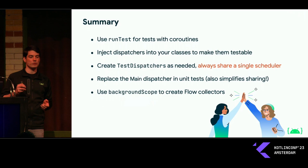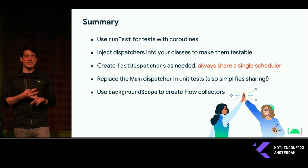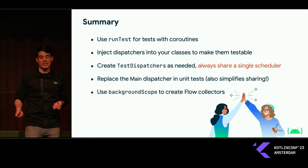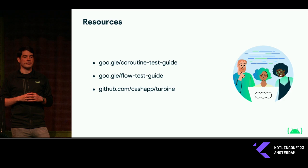Let's summarize what we learned today. Use runTest to test coroutines. Inject dispatchers into your classes to make them testable. You can create additional test dispatchers as needed, but always share a single scheduler. You can replace the main dispatcher in unit tests by calling setMain, which also simplifies sharing schedulers. And you can use backgroundScope for coroutines like flow collection that you want shut down at the end of the test.